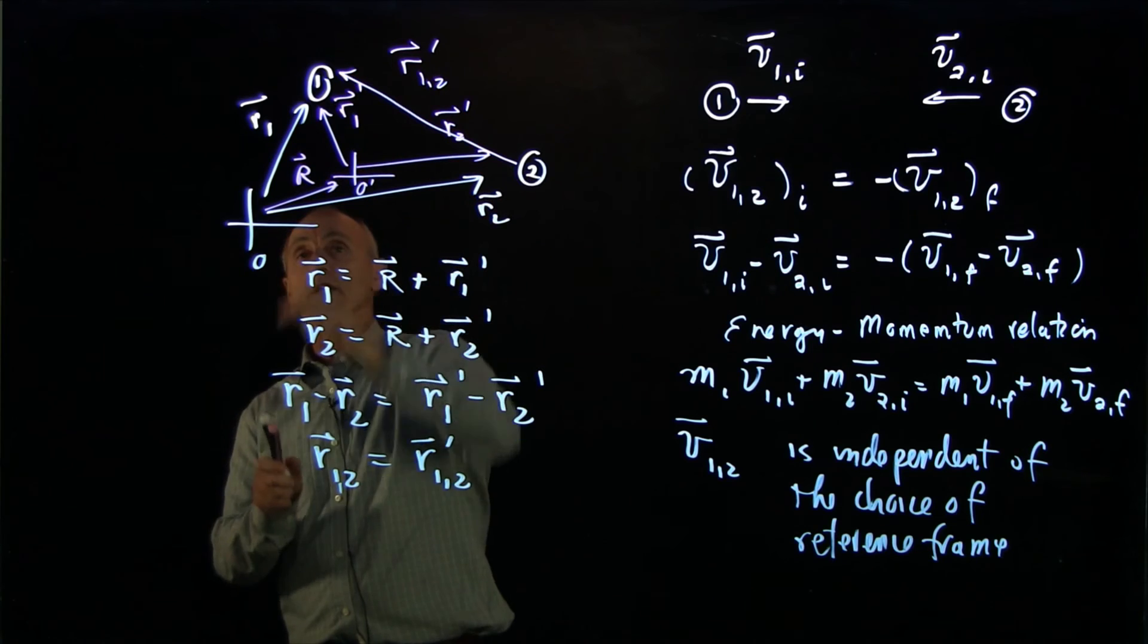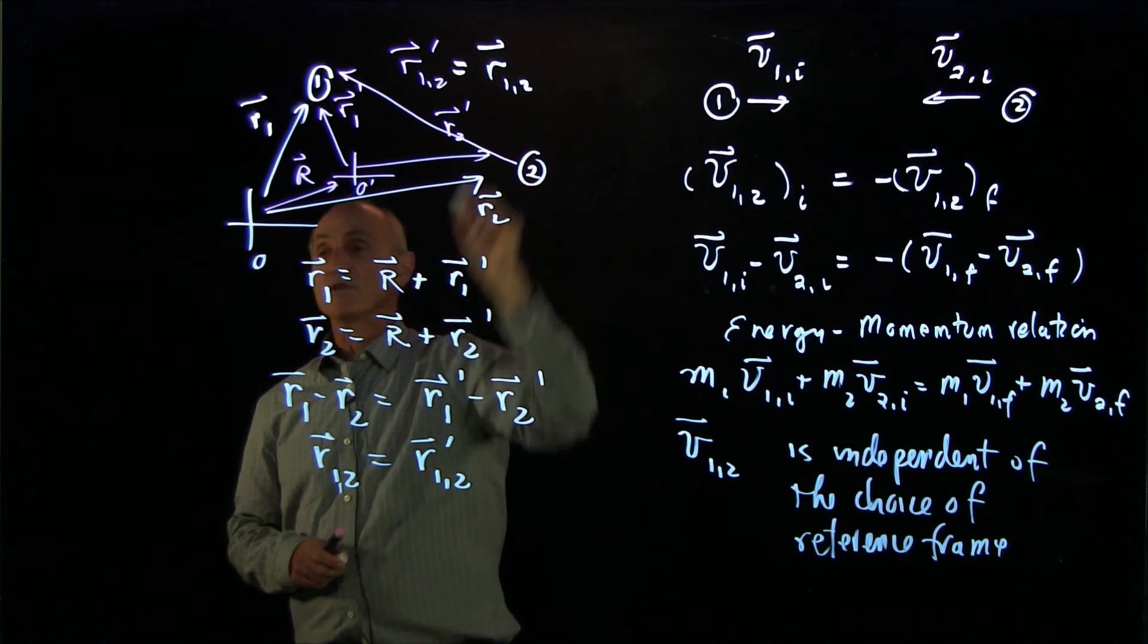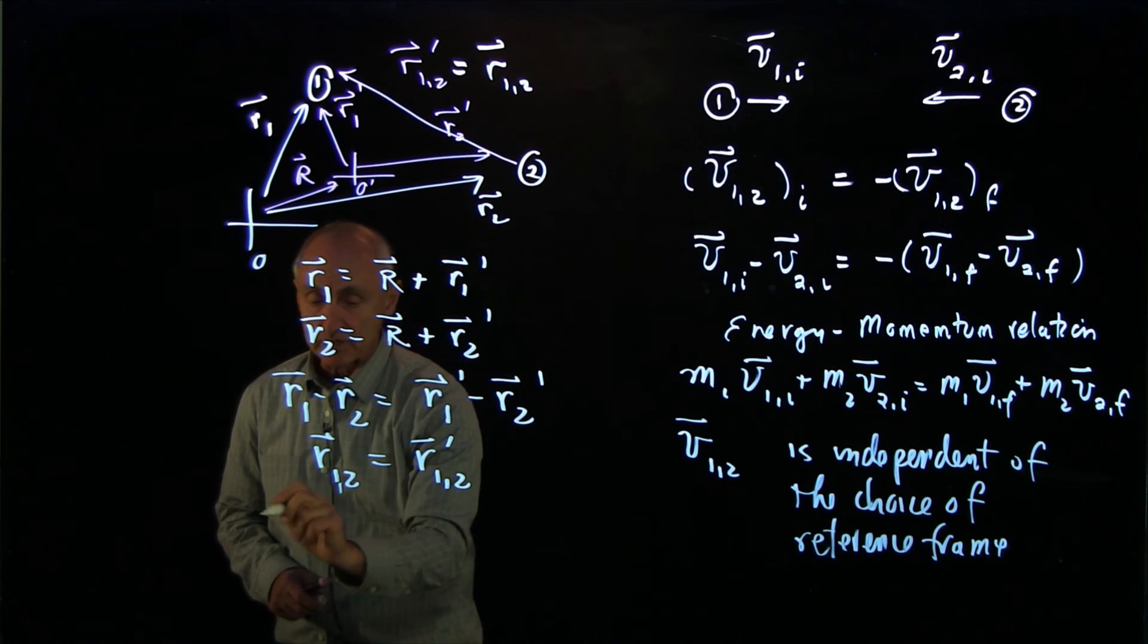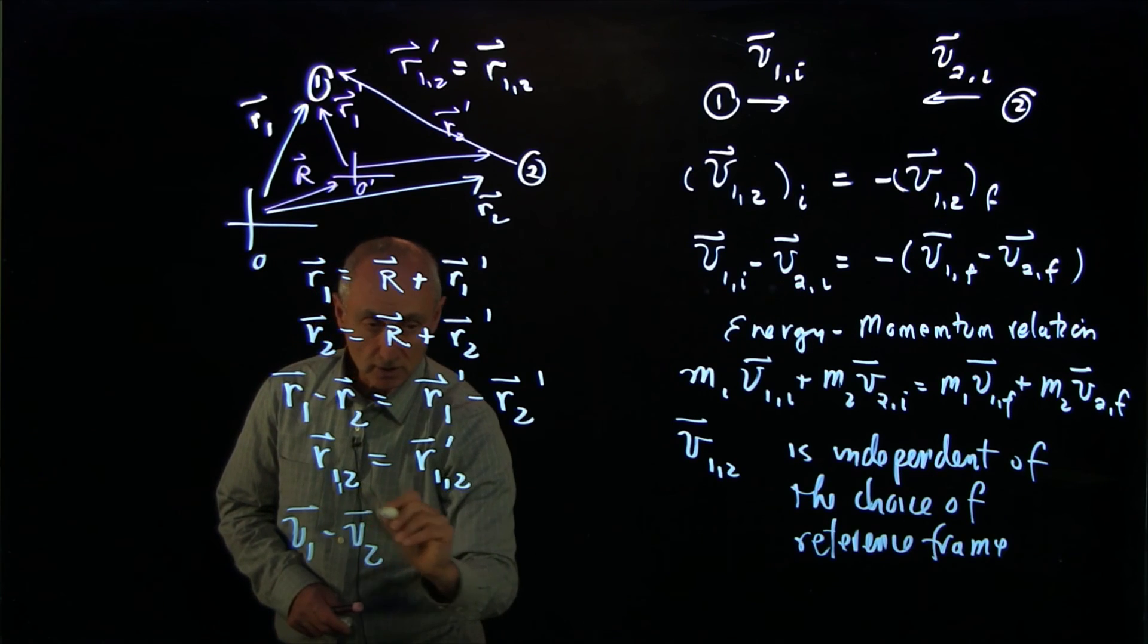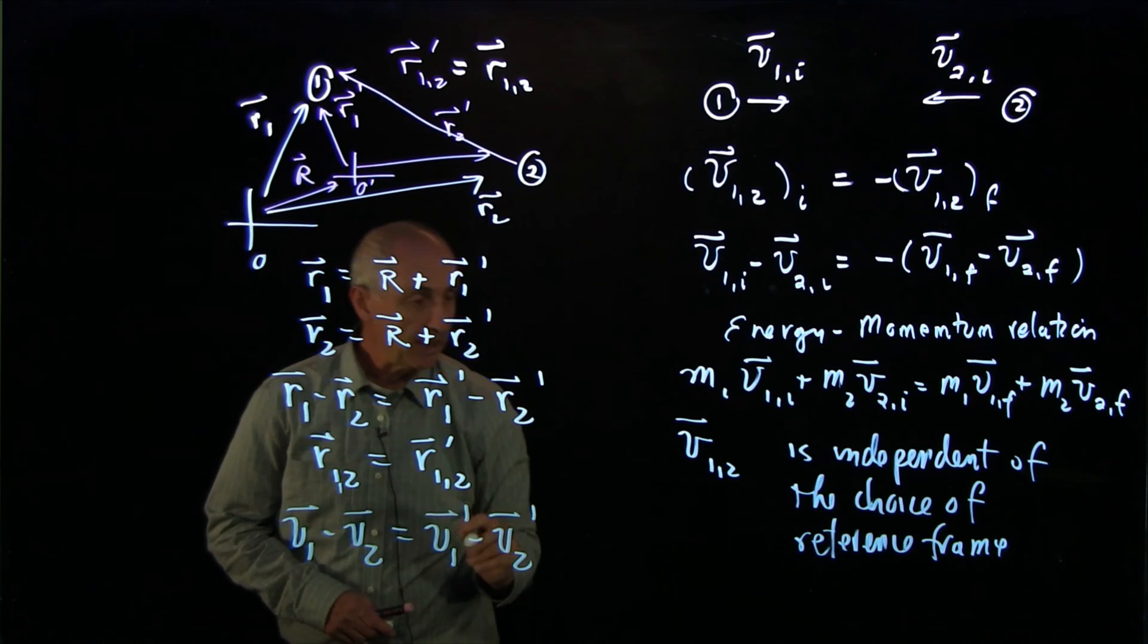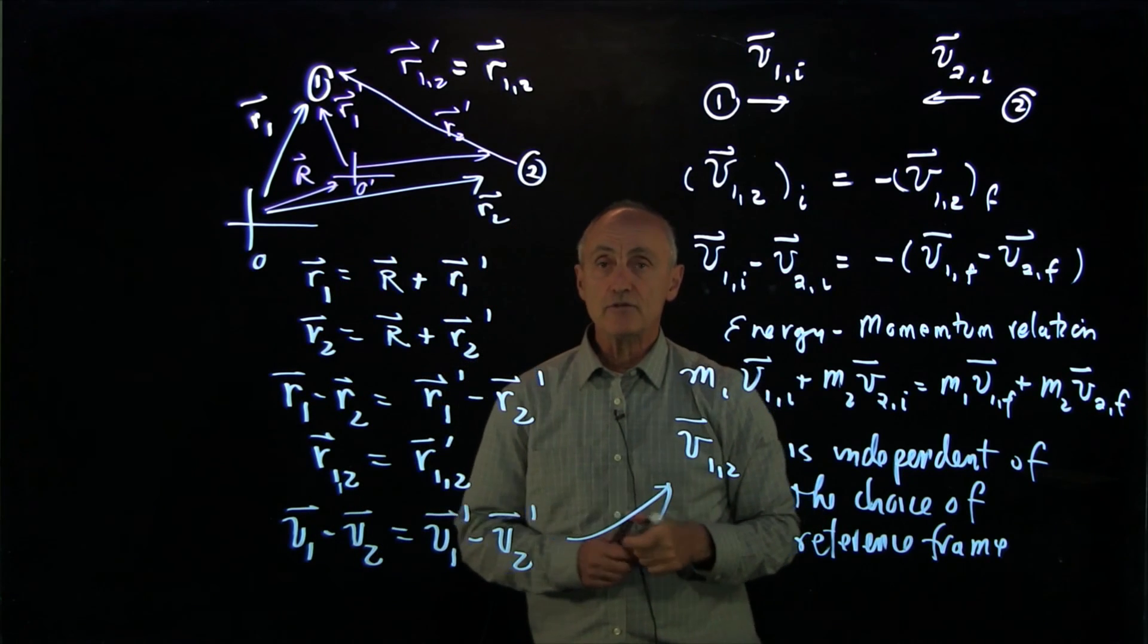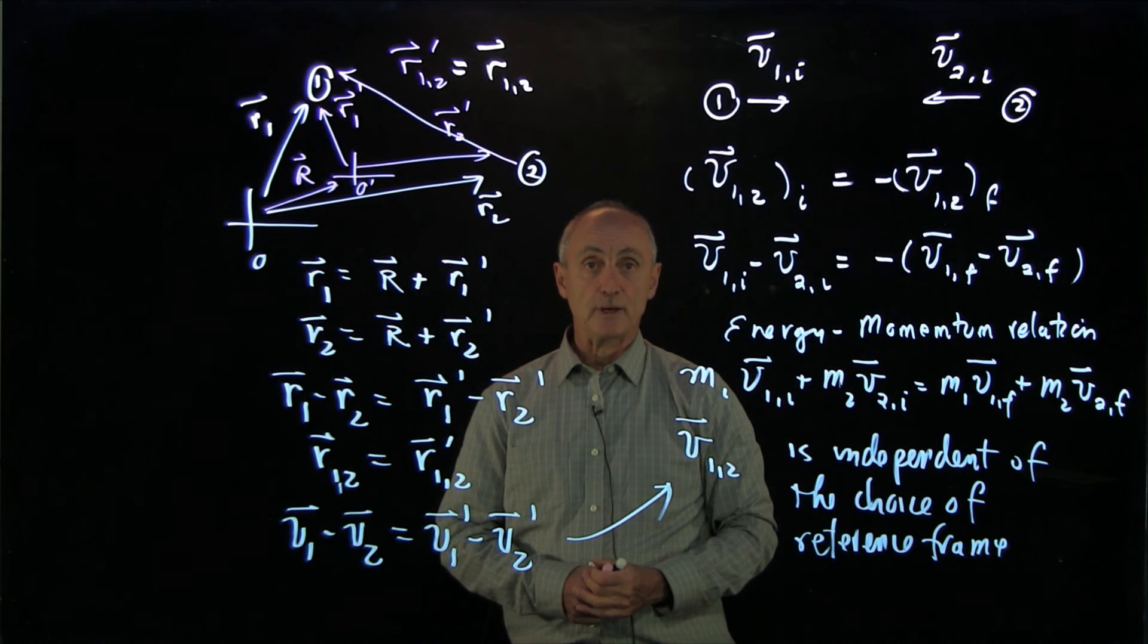And even in our diagram, we can see that the vector from 2 to 1 does not depend on the choice of reference frame. And even more importantly, when we differentiate, we get that v1 minus v2 is equal to v1 prime minus v2 prime. And that becomes our statement that the relative velocity vector is independent of the choice of reference frame.